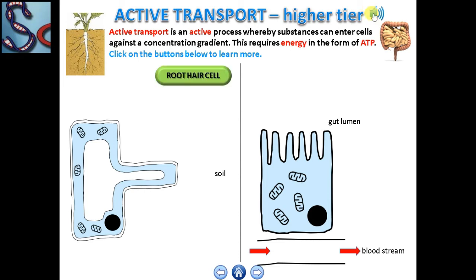Sometimes dissolved molecules are at a higher concentration inside the cell than outside, but because the organism needs these molecules, they still have to be absorbed. Carrier proteins pick up specific molecules and take them through the cell membrane against the concentration gradient by active transport — that is, from a low concentration to a high concentration of the molecule.